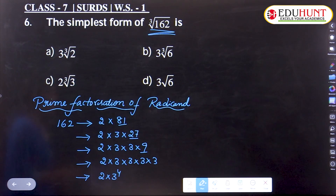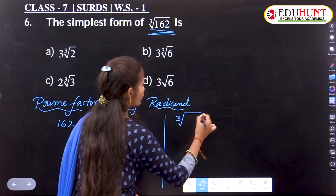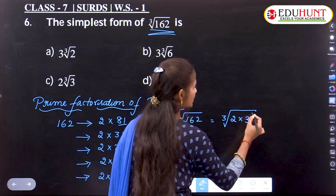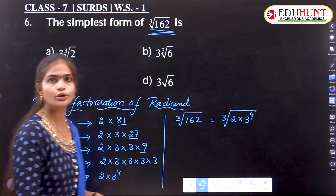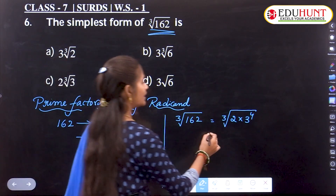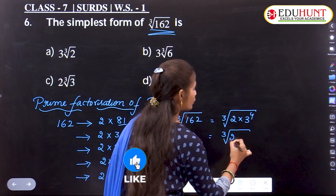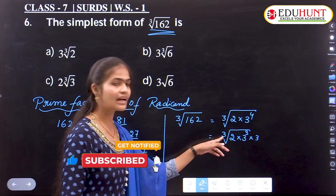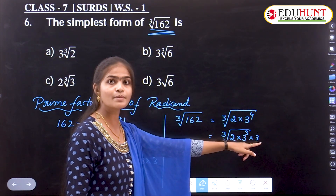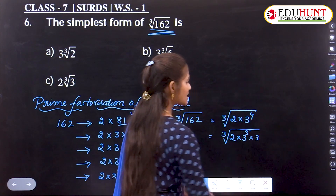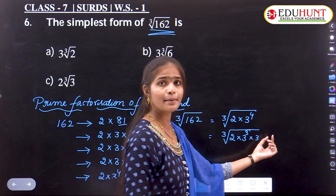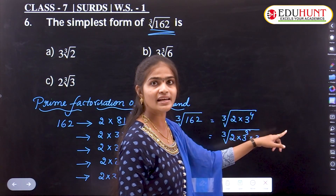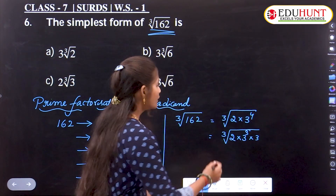So cube root of 162 = cube root of (2×3⁴). Now 3⁴ can be written as 3³×3, using the exponent rule aᵐ·aⁿ = aᵐ⁺ⁿ, since 3+1=4. So we have cube root of (2×3³×3).